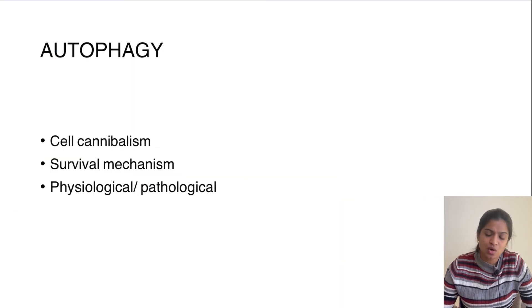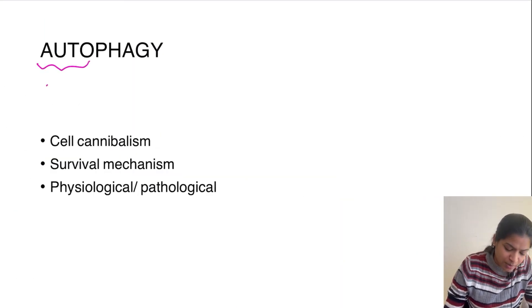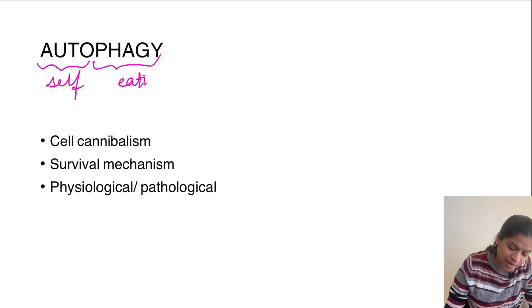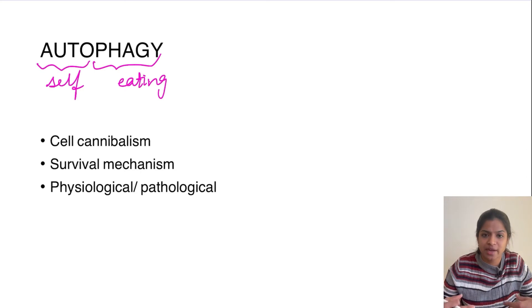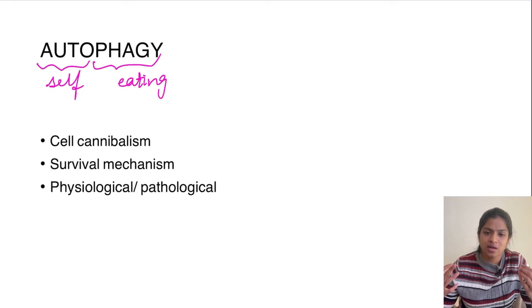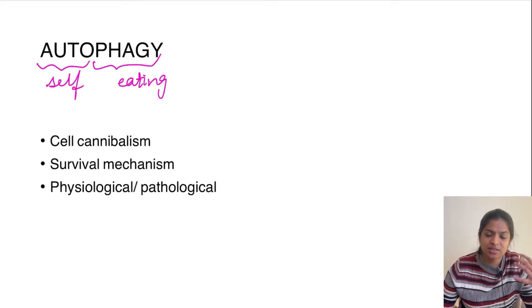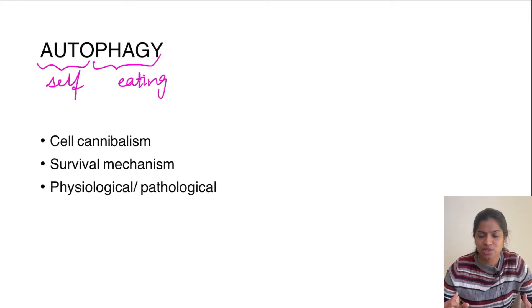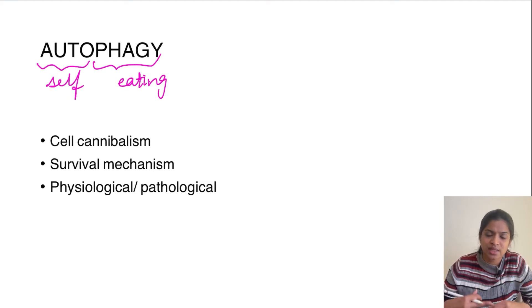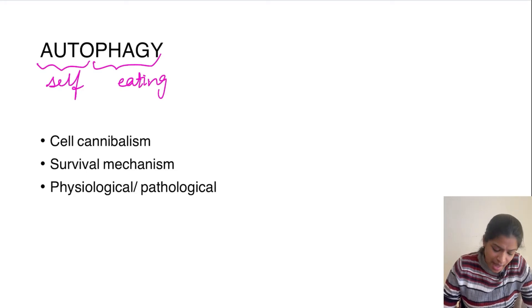So what is autophagy? As the name suggests, 'auto' means self while 'phagy' means eating, so it literally means self-eating. When does a cell eat itself? It is when it is in need of survival — whenever there is a decrease in growth factor or decrease in nutrition, the cell will try to survive by eating its own cell contents. So it is also called as cell cannibalism.